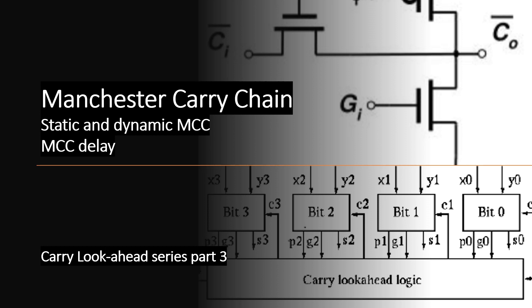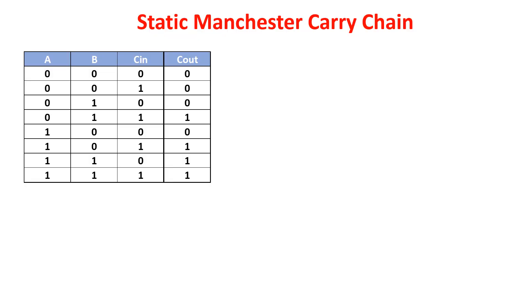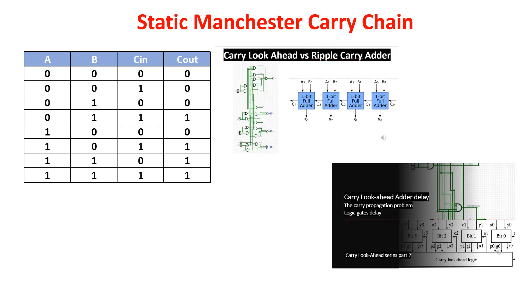In this video we see the basic principle of the Manchester Carry logic, analyzing both the static and dynamic Manchester Carry Chain. Among all high-speed adders, the Carry look-ahead adder is much faster. The Manchester Carry Chain is the most common CLA adder architecture, with a regular, fast and simple structure adequate for an implementation in VLSI. Manchester Carry Chain is a logic we apply to the Carry look-ahead adder. I highly suggest you watch first my two previous videos about the Carry look-ahead, links are in the description.